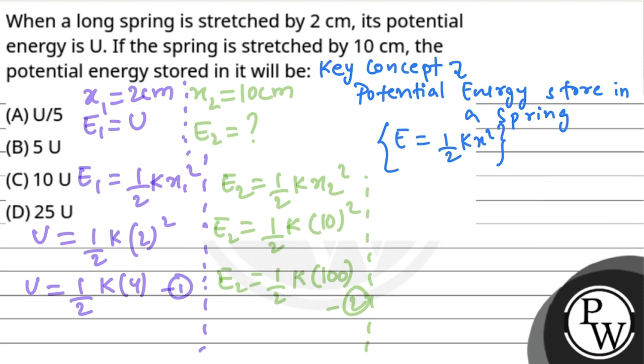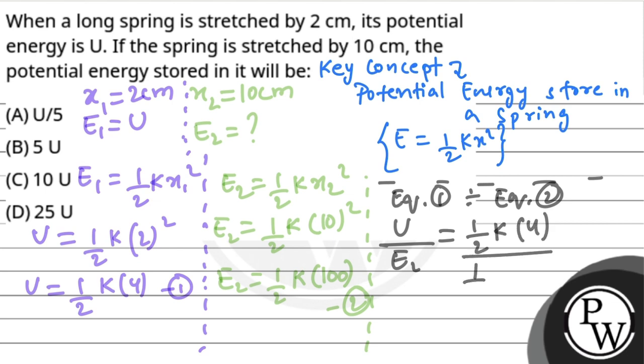Now we will divide equation 1 by equation 2. On dividing both equations we get U/E₂ equals ½k(4) over ½k(100). The spring constant k is the same in both cases because it's the same spring, so k cancels out.